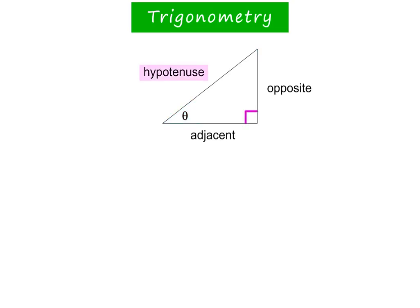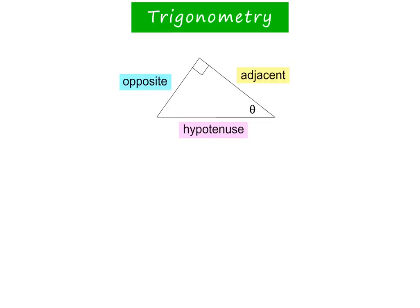Let's recap. The hypotenuse always lies opposite the right angle. The adjacent side lies next to theta and the opposite side lies opposite theta. This will always be true, no matter in what position the triangle lies.